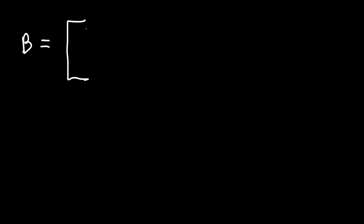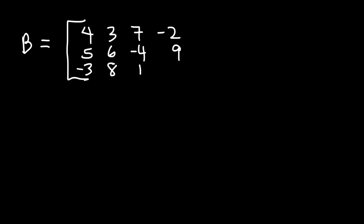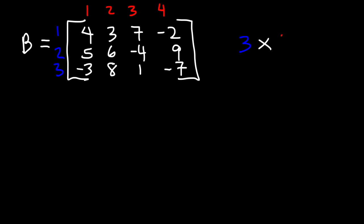Let's consider another matrix. Matrix B has the numbers 4, 3, 7, negative 2, 5, 6, negative 4, 9, negative 3, 8, 1, and negative 7. What is the order of the matrix? There are three rows — row 1, row 2, row 3 — and four columns — columns 1, 2, 3, 4.